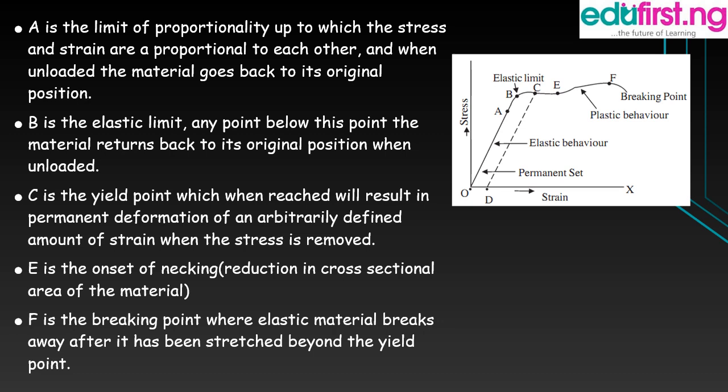Point C is known as the yield point. The yield point is the point when reached that will result in permanent deformation of an arbitrarily defined amount of strain when the stress is removed. At point C, a material will not be able to return back to its original position — it has reached permanent deformation. Point E is the onset of necking, where there is a reduction in cross-sectional area. Point F is the breaking point. When a material reaches point F, it breaks off and will not be able to retain its shape again.